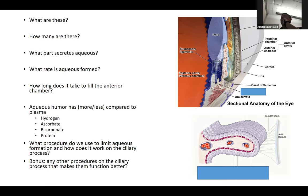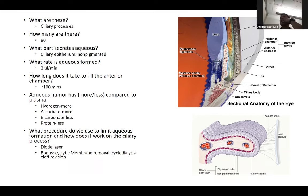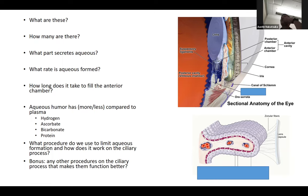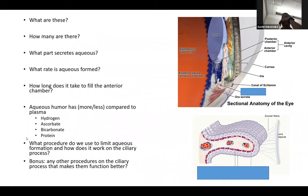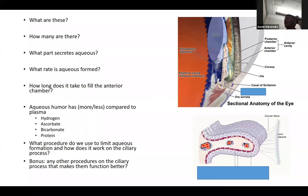What is significant about the ciliary body — what does it do? It secretes aqueous. What part of it secretes aqueous? It's the pars plana — the non-pigmented inner epithelium. And what is the rate that aqueous is formed? It's about 2 to 2.5 microliters per minute.